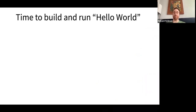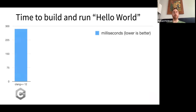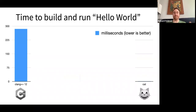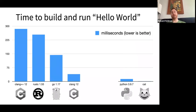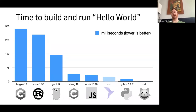Here's a simple benchmark of how long it takes to compile and run Hello World in different programming languages. C++ took a little under 300 milliseconds. At the opposite extreme we had `cat` — basically unbeatable. Python was a little slower than cat but quite a bit faster than C++. Rust was a little faster than C++, but not by much. Go was a lot faster than that. Clang was way faster than Go. JavaScript on Node.js is a little bit faster than Clang, and Roc was somewhere in between Node.js and Python. We're pretty happy with this result.